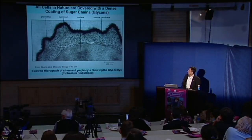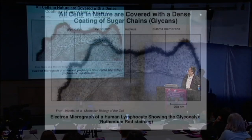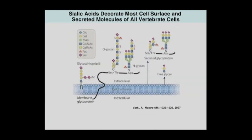All cells in nature are covered with a dense coating of sugar chains or glycans. This would be an electron micrograph of a human lymphocyte, and you can see that this thick layer of sugar chains is coating all cell surfaces. This is true of every cell in your body. If we were to zoom in, we now know the structure of a lot of these different types of sugar chains, and what we find is that sialic acids decorate most cell surface and secreted molecules of all vertebrate cells, sitting out on the tips.